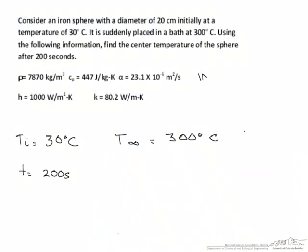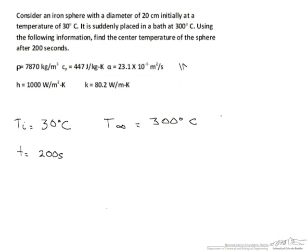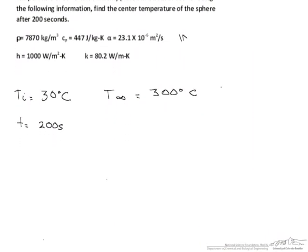The easiest way to solve a transient conduction problem is to use lumped capacitance. But in order to do that, you have to have a Biot number of less than 0.1. So let's go ahead and calculate this number.